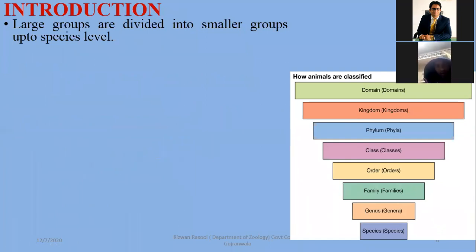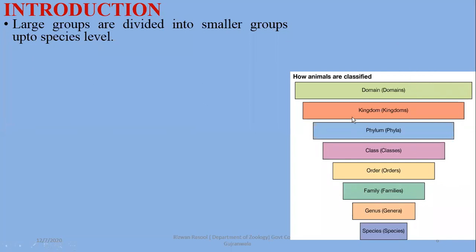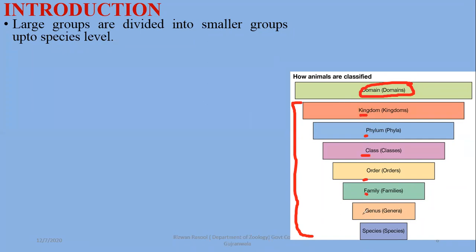There are different levels of classification. Although domain is not mentioned in your syllabus, the levels are: kingdom, phylum, class, order, family, genus, and species. To remember these, you can use mnemonic words — for example, 'King Philip Came Over For Good Soup' or a similar mnemonic device.